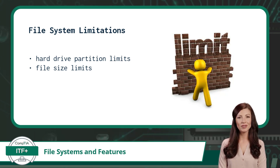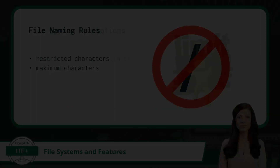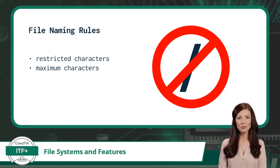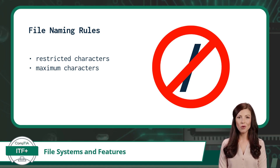File system limitations vary depending on the file system you are working with. There may be maximum capacity limits for a hard drive partition or a maximum size limit for an individual file. Additionally, file systems each have naming rules that dictate which characters are allowed or disallowed in a file name — such as the forward slash character — and how many characters each file name can contain. Adhering to naming rules ensures all files are easily identifiable and accessible within the file system.